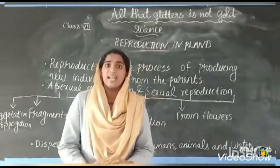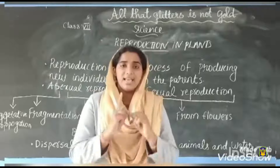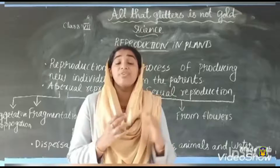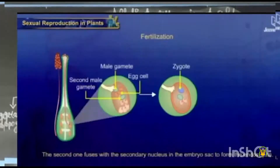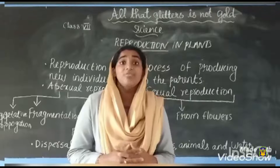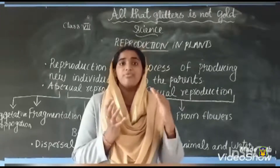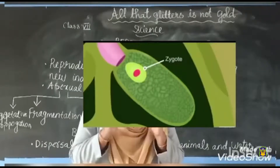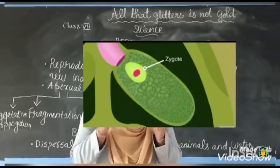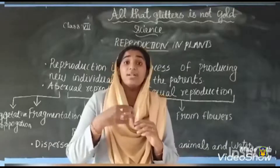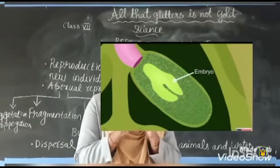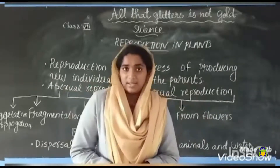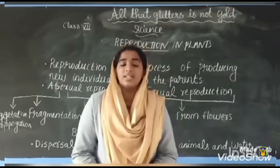After that we discussed about fertilization. Fertilization is the process of fusion of male gametes with the female gametes to form a zygote. The zygote then develops into an embryo, and the embryo develops into a seed, from which a new plant is obtained.